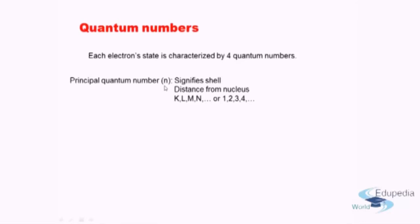The principal quantum number is represented by K, L, M, N — or equivalently 1, 2, 3, 4 — where K represents the first shell, L the second, and so on. This concept of principal quantum number can be directly derived from the Bohr's model, where the orbits in which electrons revolve around the nucleus are the principal quantum number equivalent.